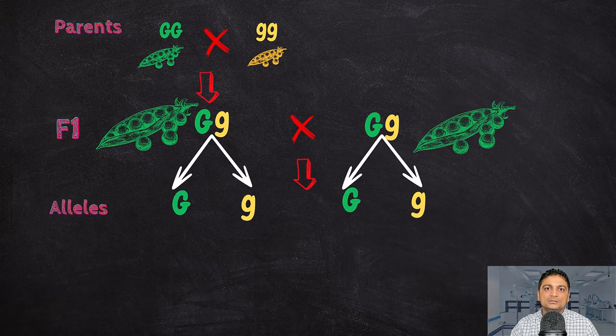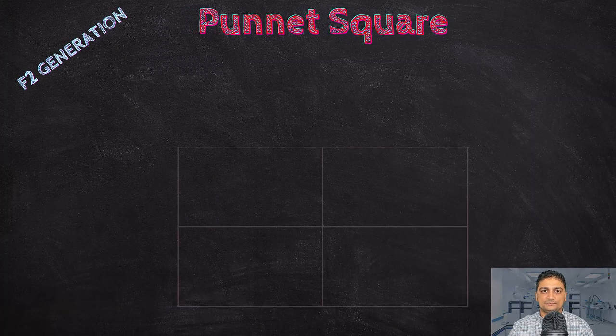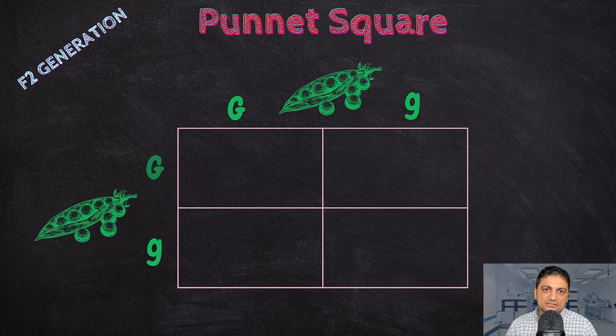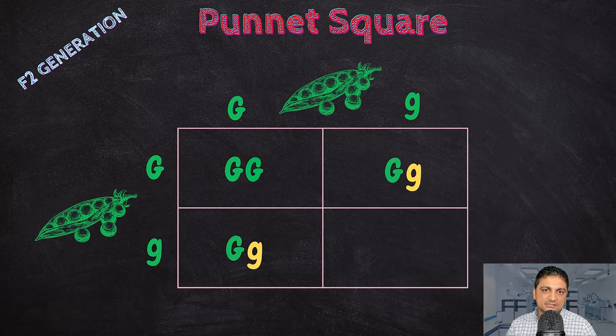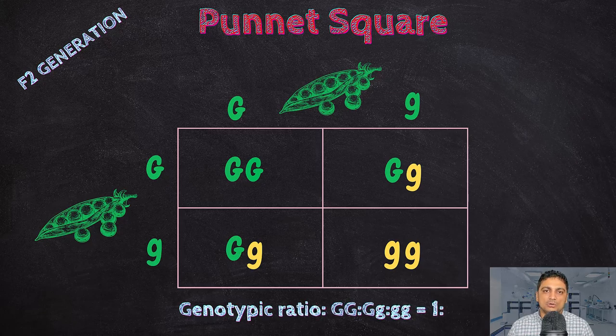If we cross or self these F1 pea plants, we can see the possibilities in the F2 generation, and for this we can use a Punnett square. In the F2 generation there will be segregation of the alleles. Since the plants are heterozygous with uppercase G and lowercase g, there will be three different combinations of alleles: uppercase GG, heterozygous uppercase G and lowercase g, and lowercase gg. This gives three different genotypic combinations and the final genotypic ratio is going to be 1:2:1, while the phenotypic ratio will be very different.